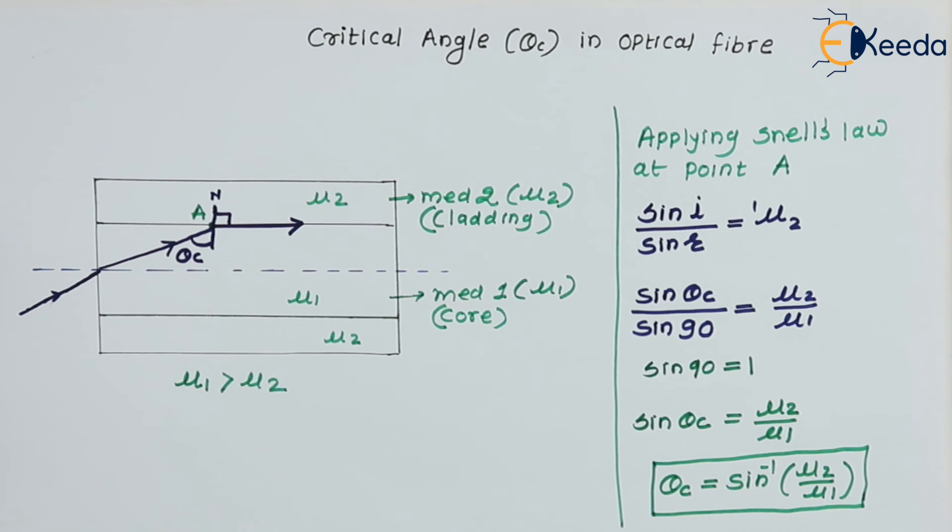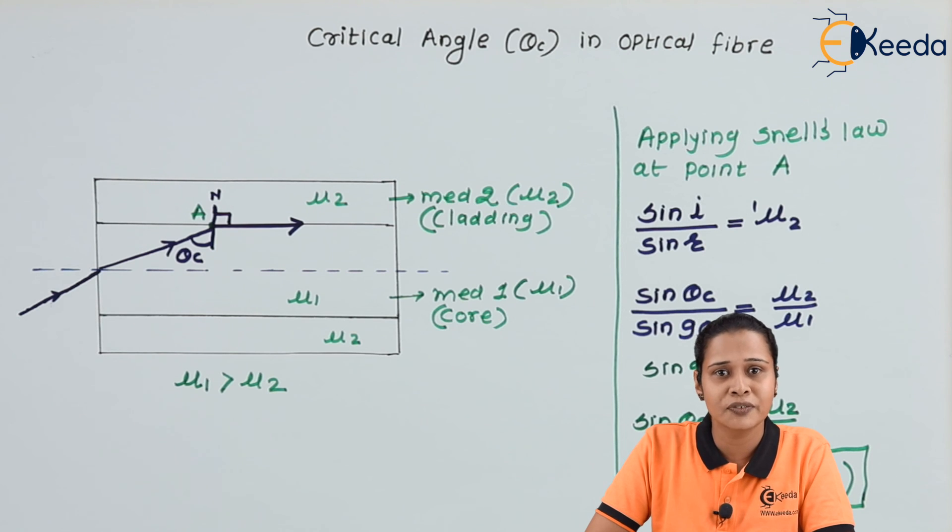So if we know the refractive index of different mediums, we can find out the critical angle value. Or else, suppose we know the critical angle value, we can find out the refractive index of the medium. Thanks for watching this video.